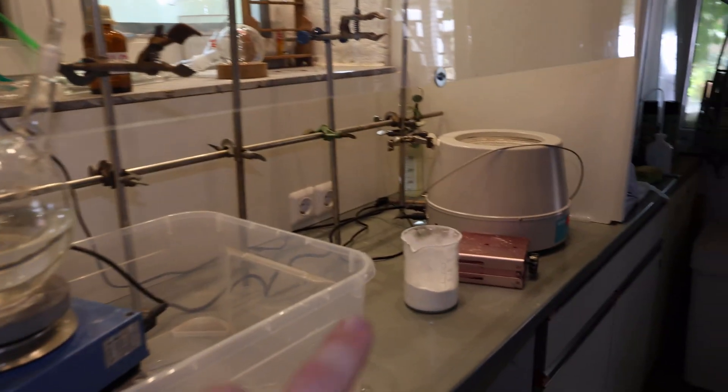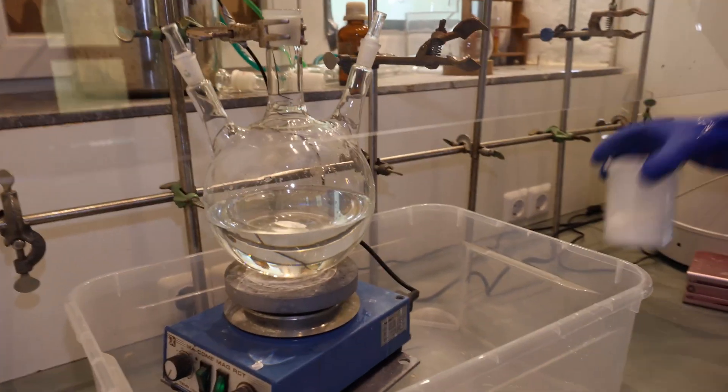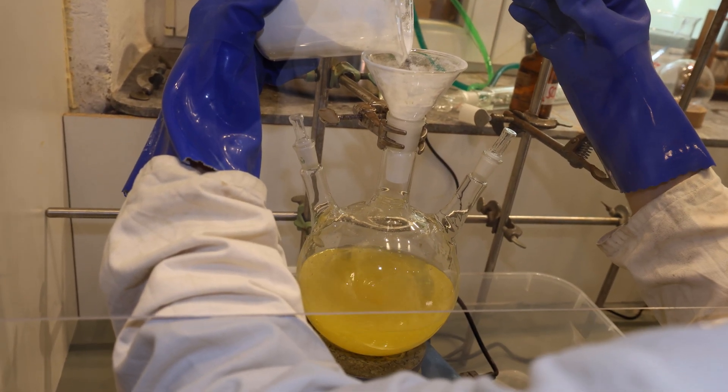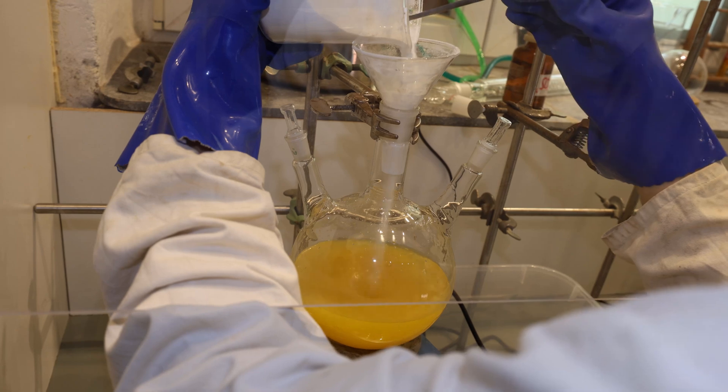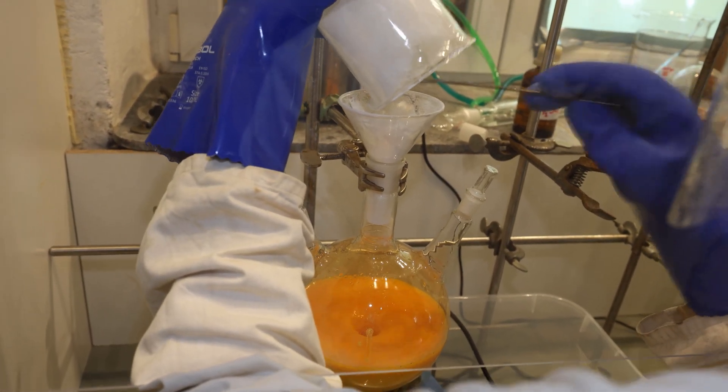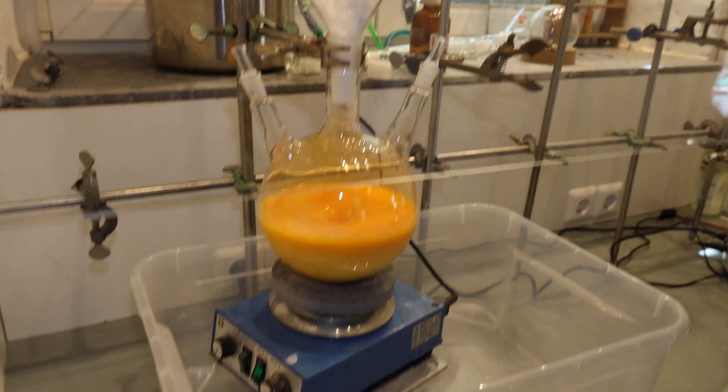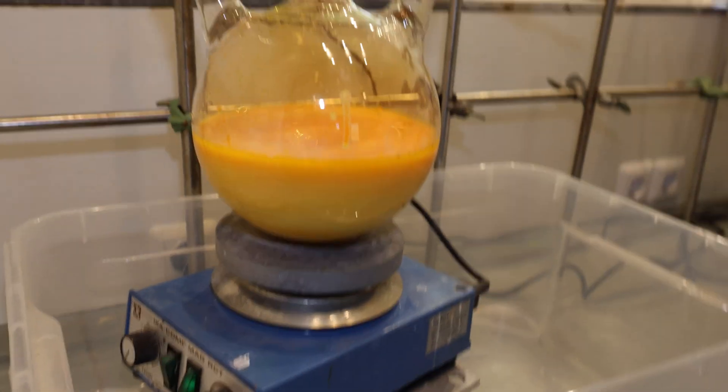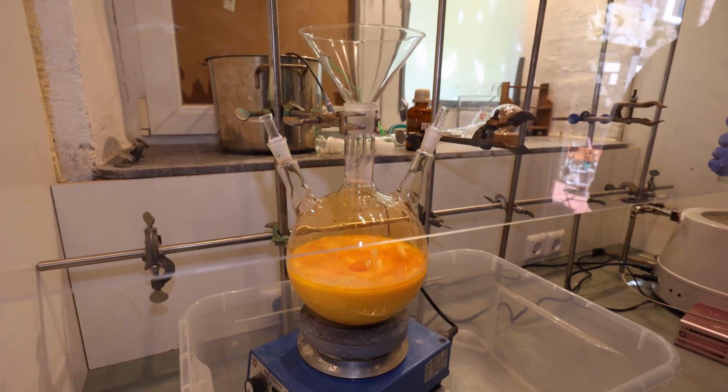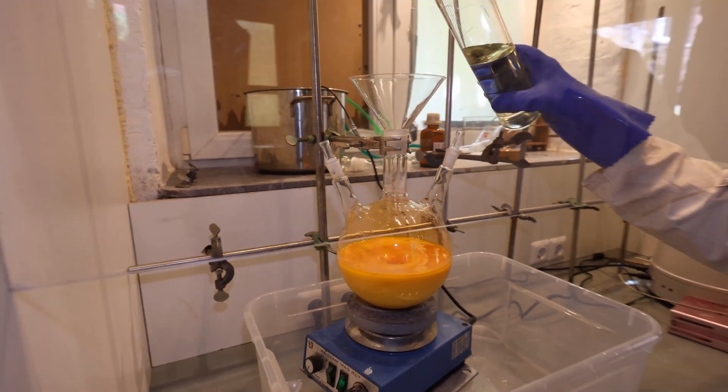Next we're going to need to put the TCCA in there somehow. All right now we're going to add the hydrochloric acid and this will increase the bromine production quite a bit.